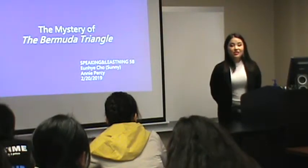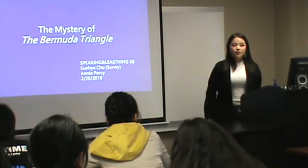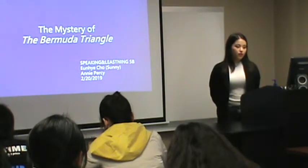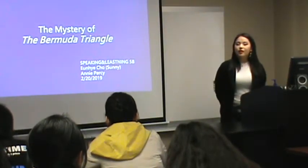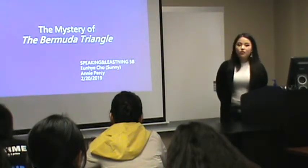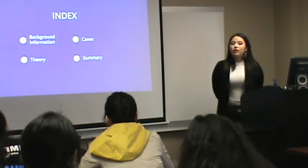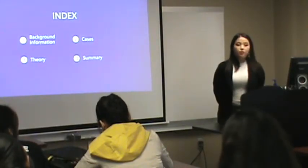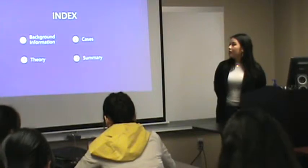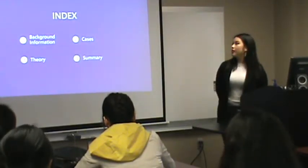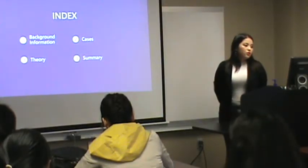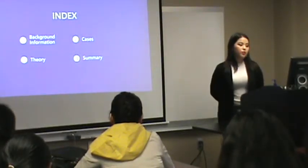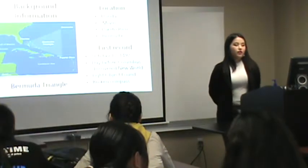However, besides this joke, the world has many mysterious events that really do not solve. A prime example is today my topic. The name is Bermuda Triangle. This is my preview. The first thing I am going to explain is background information about the Bermuda Triangle. Second, I want to explain some important cases. Furthermore, I want to explain the theory, and finally I am going to explain some summaries. Now let's begin.